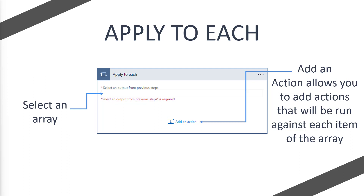Let's use an example. Say we have a numbers array of 1, 2, 3, and 4, and we want to create rows in Dataverse if the number is greater than 3. Our if statement would check: is the current item greater than 3? For 1, 2, and 3 the answer is no, but when it gets to 4, the answer is yes and we execute the actions inside the if statement.